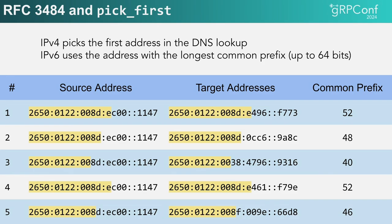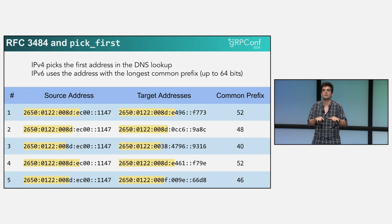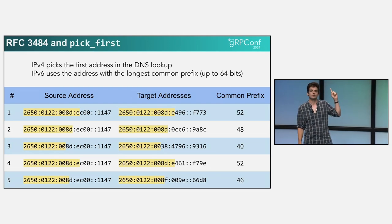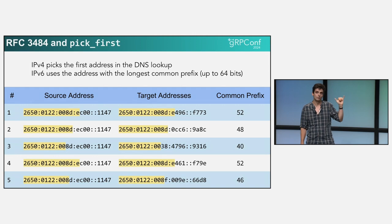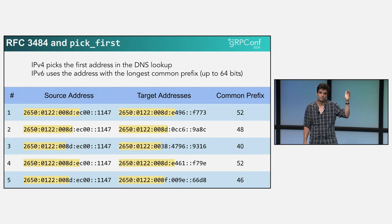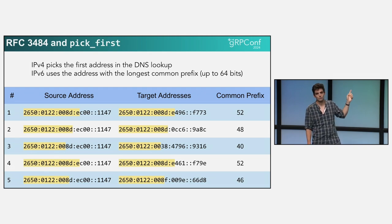When you ask the operating system for the IPs for a DNS record, in IPv4 you get back the IP addresses in the order they're present in the record. In IPv6, however, you get them according to a very specific set of rules dictated by RFC 3484. The IPs are sorted based on how close the target is to the source IP, up to the first 64 bits — basically a longest prefix match. So addresses sharing the same highest prefix length get tried first before going down the order of prefix length.